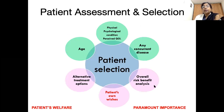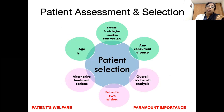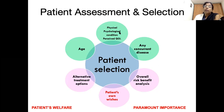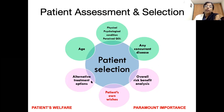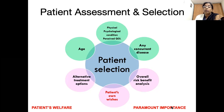Patient selection requires assessment of age — for auricular prosthesis, mastoid growth is completed at eight years, so implantation is better after that age. We must also consider concurrent diseases that might affect osseointegration or surgery, the overall physical condition, psychological status, and the patient's desired quality of life. We must analyze the risks and benefits of all available treatment options, then select the one most beneficial to the patient, as patient welfare is of paramount importance.